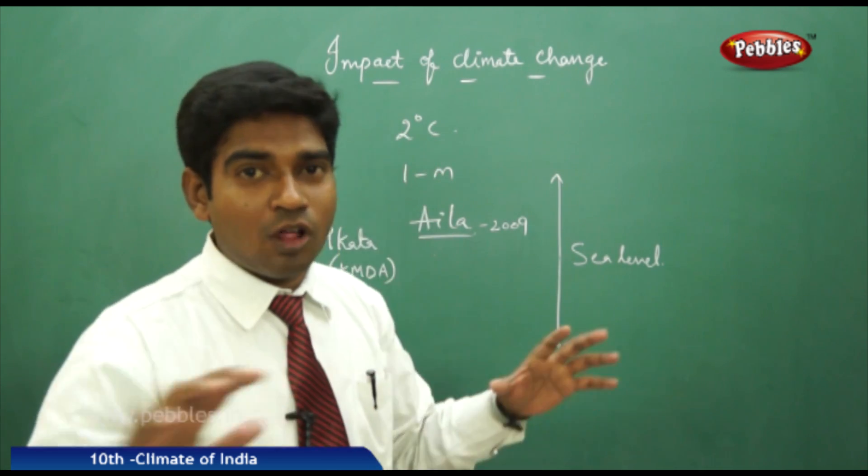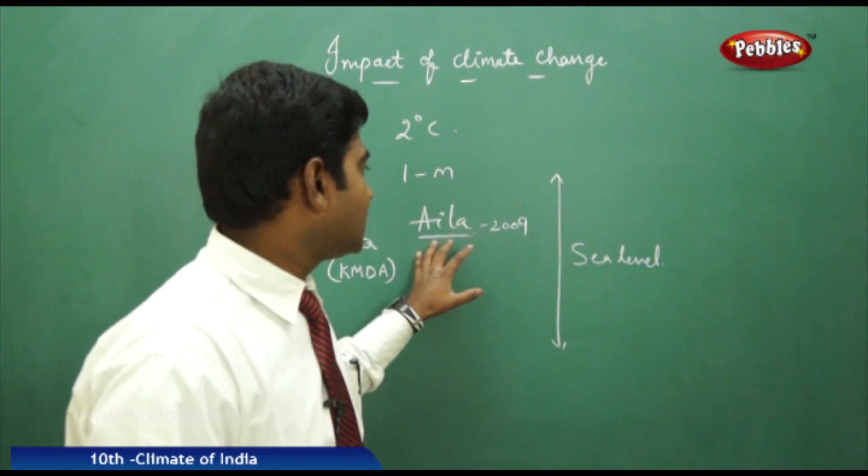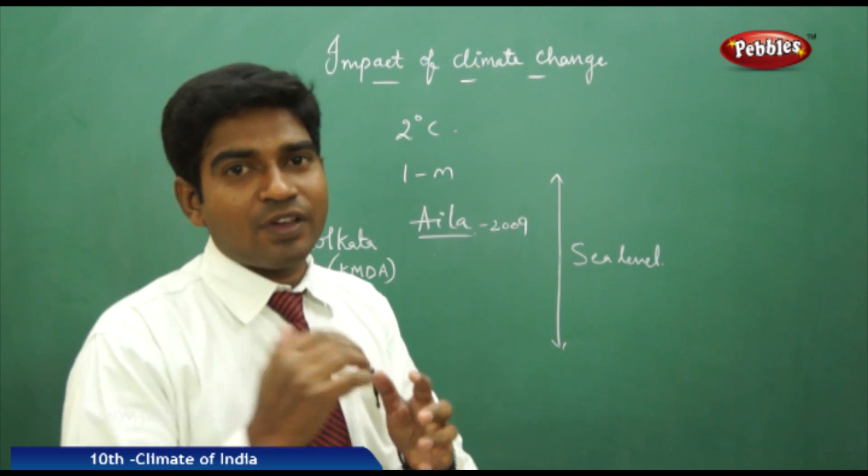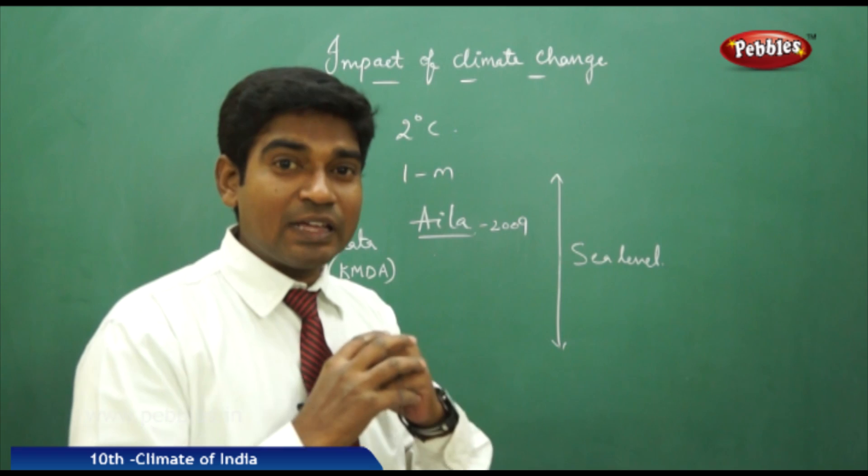So 1 meter above the normal level, all the coastal areas were influenced by this. And when the Aila Tufan which came in 2009, Aila Super Cyclone which occurred in 2009, many of the families which are in the eastern part of Kolkata have lost their houses to many thunderstorms.